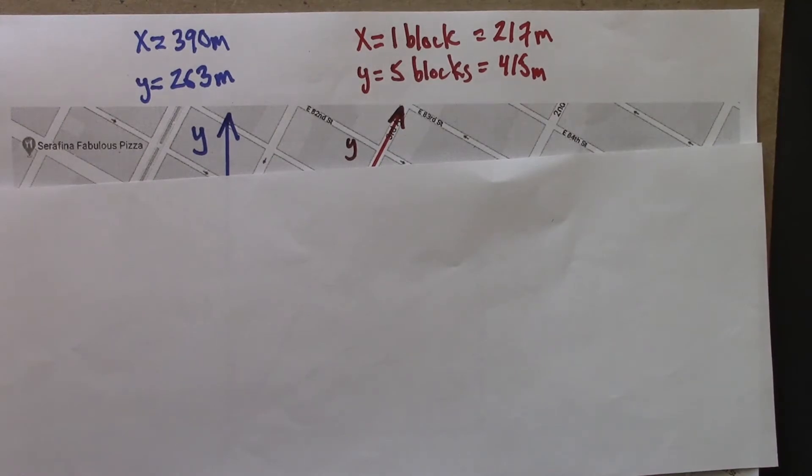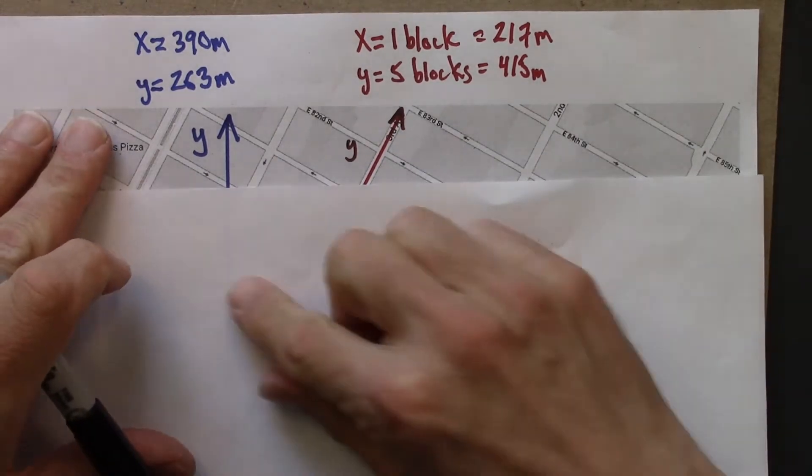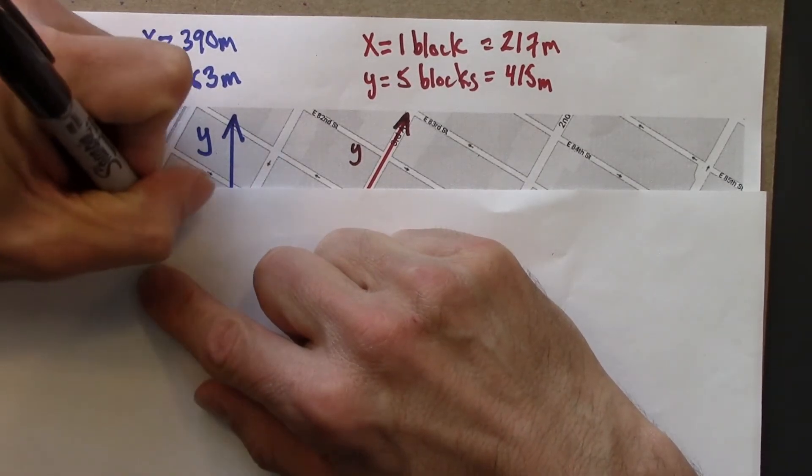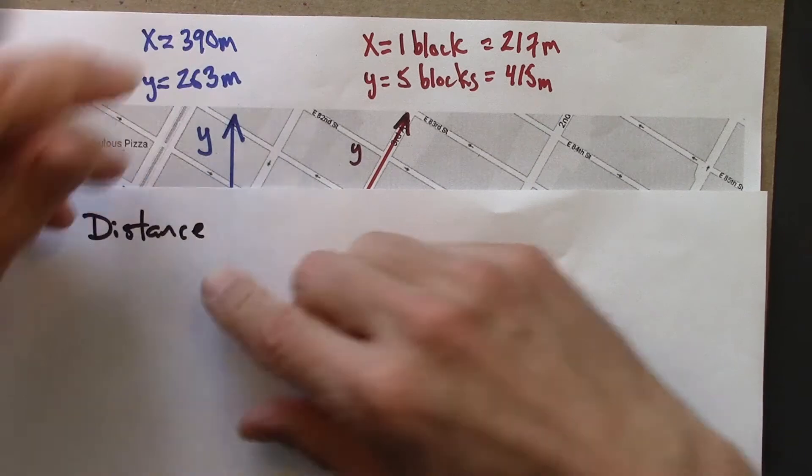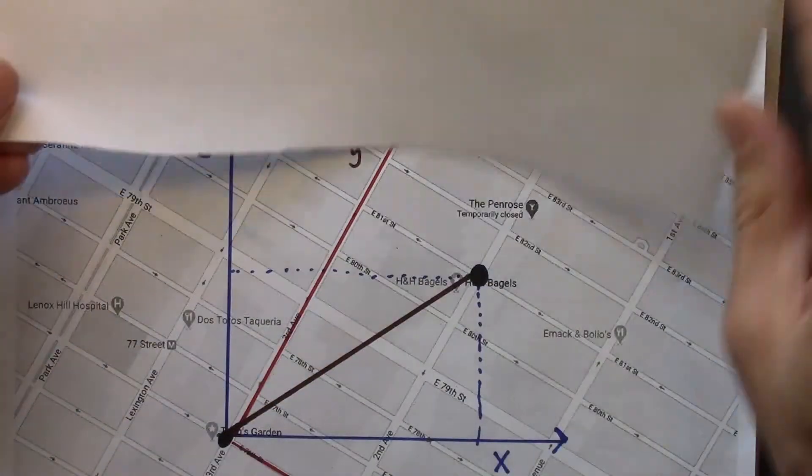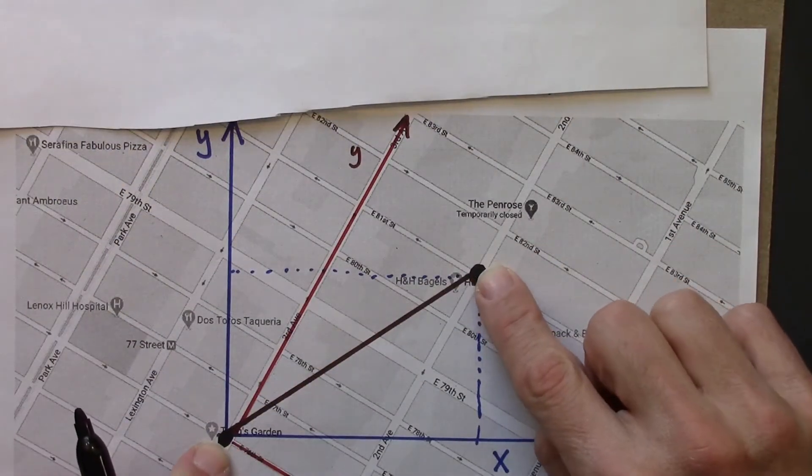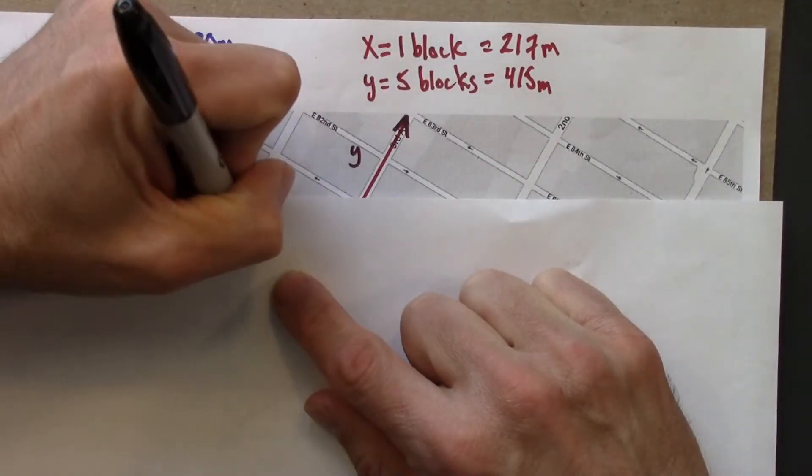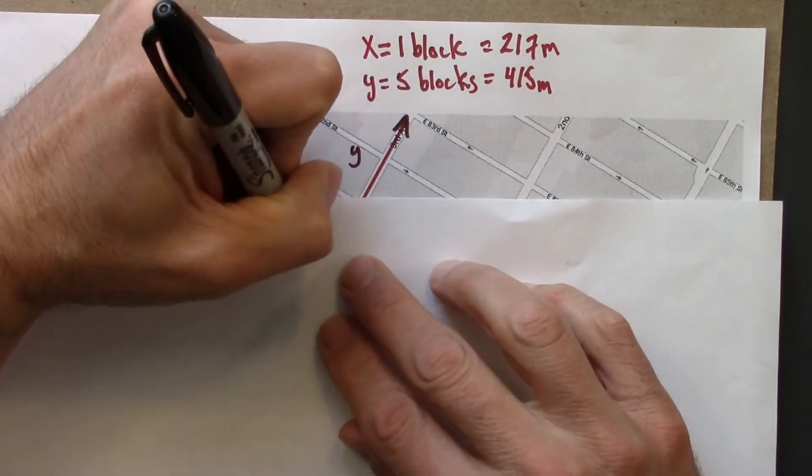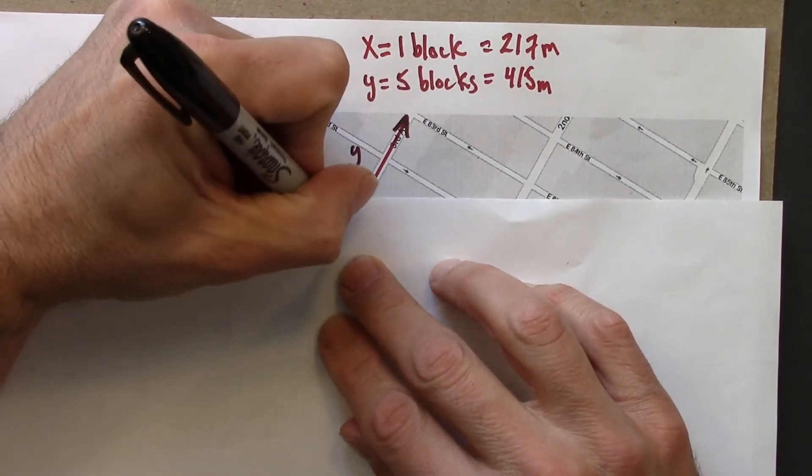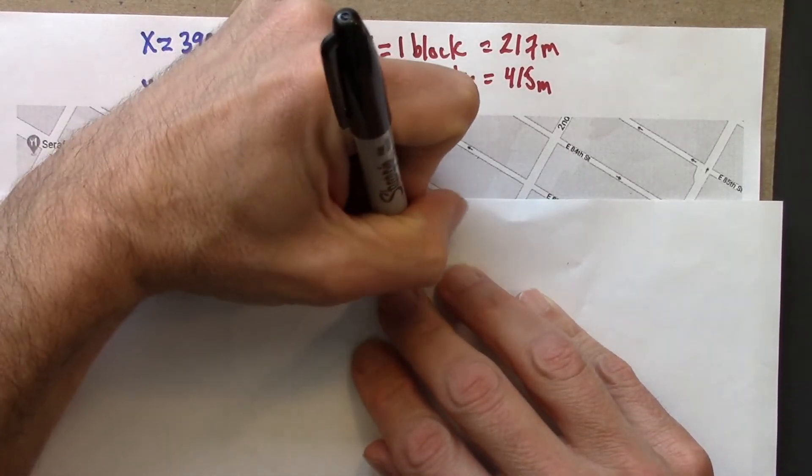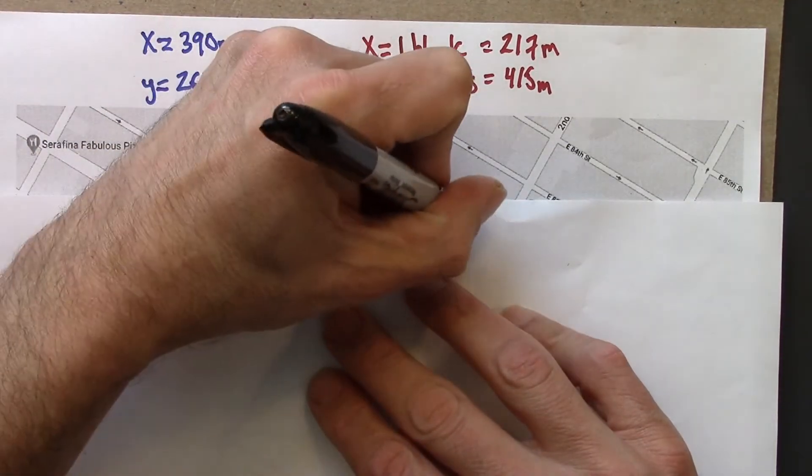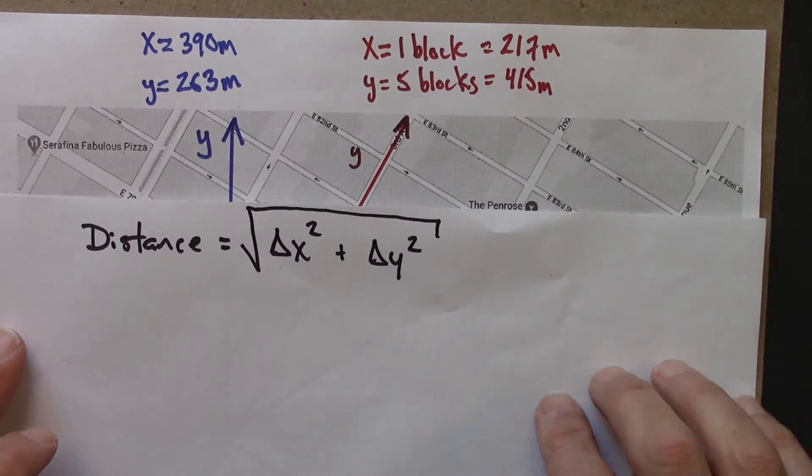Distance is the straight line distance between two points, the shortest distance between two points. And we know a formula for that. That's delta x squared plus delta y squared square root. This is the Pythagorean theorem.